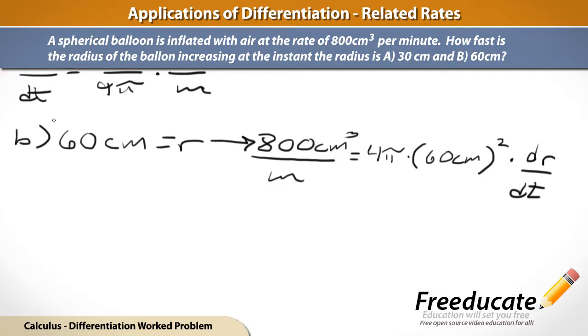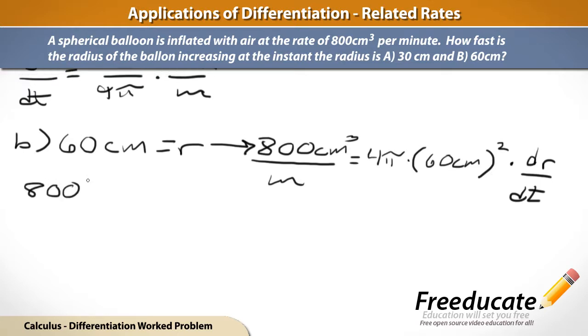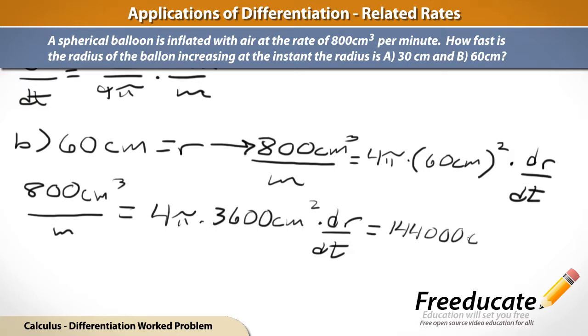So, using the exact same process or procedure we used on part A, we get that 800 cubic centimeters per minute equals 4 pi times, and 60 times 60 is going to be 3600 square centimeters times dr/dt. And that's going to equal 3600 times 4 is going to be 14,400 pi square centimeters times dr/dt.